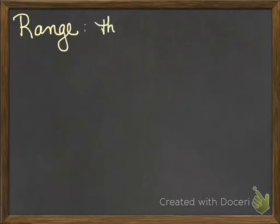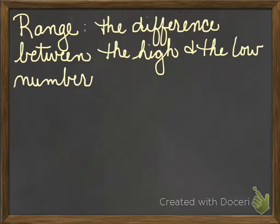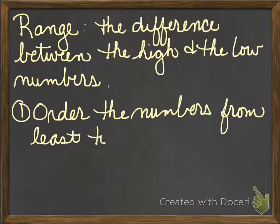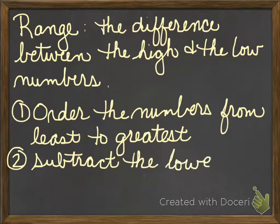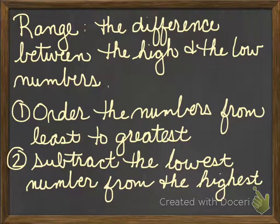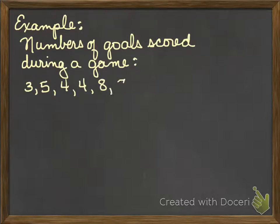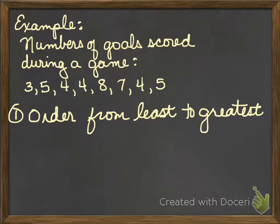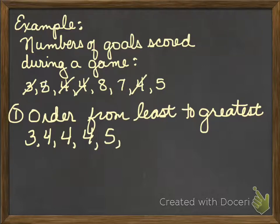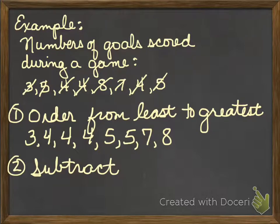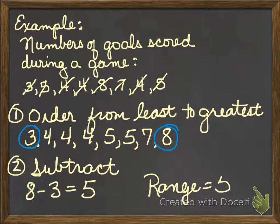Let's look at range. Range is the difference between the highest number and the lowest number. To find the range, the easiest thing to do is use your numbers in order from least to greatest, then take the high number minus the low number. Looking at our goals example, my high number is eight and my low number is three. So I subtract eight minus three — my range is five.